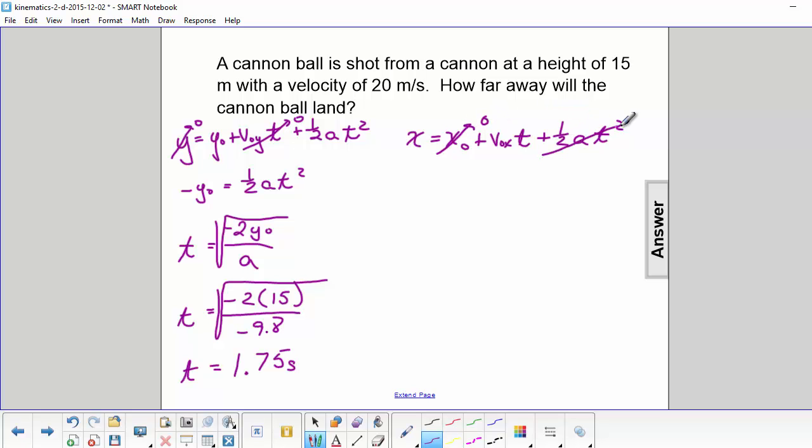x0 is zero and there's no acceleration in the x direction. So x is equal to v0x times t.